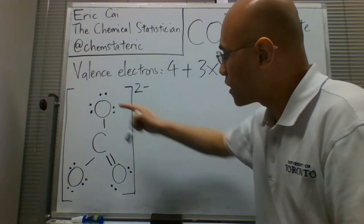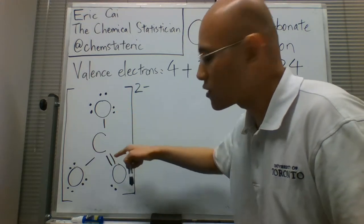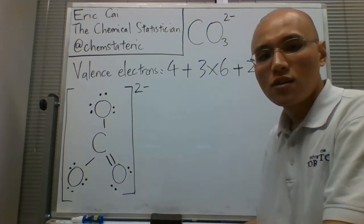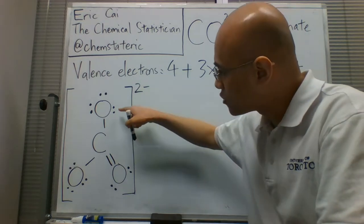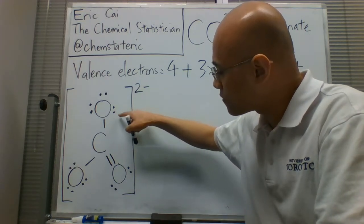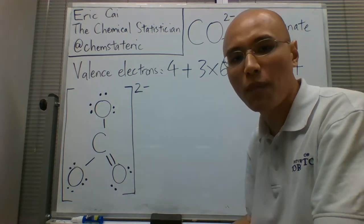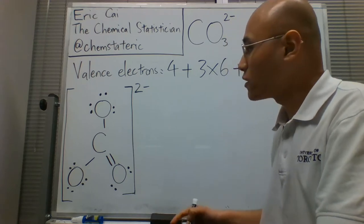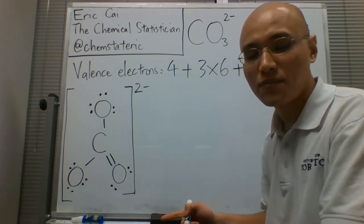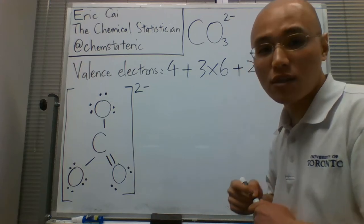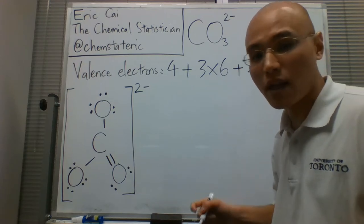But of course, each of those oxygens could be donating a pair of electrons into that bond with the carbon. So we, in fact, have three resonance structures. And we denote resonance structures, of course, with double-headed arrows.